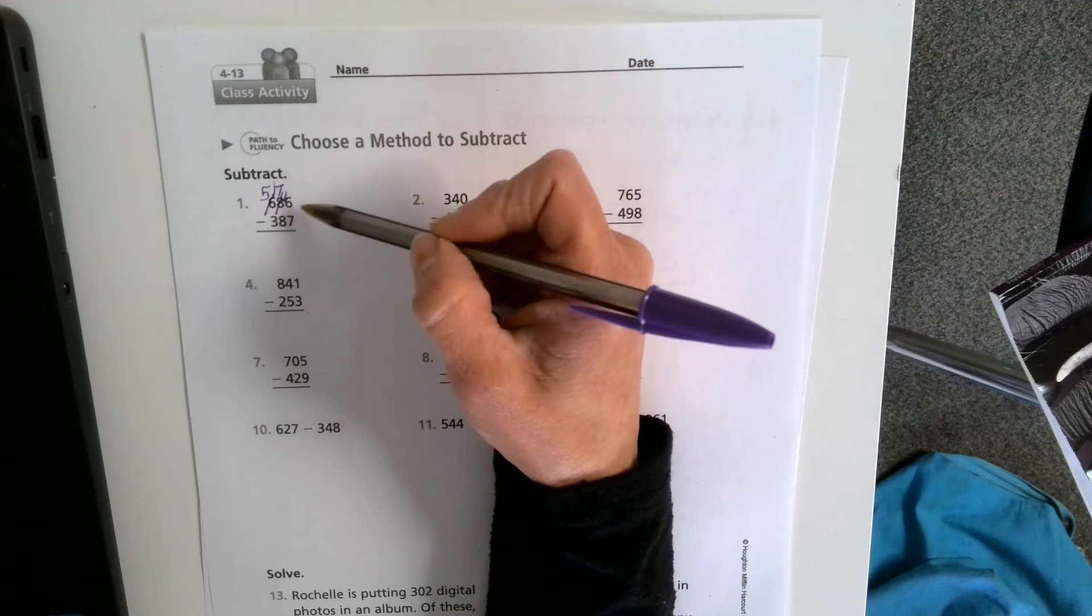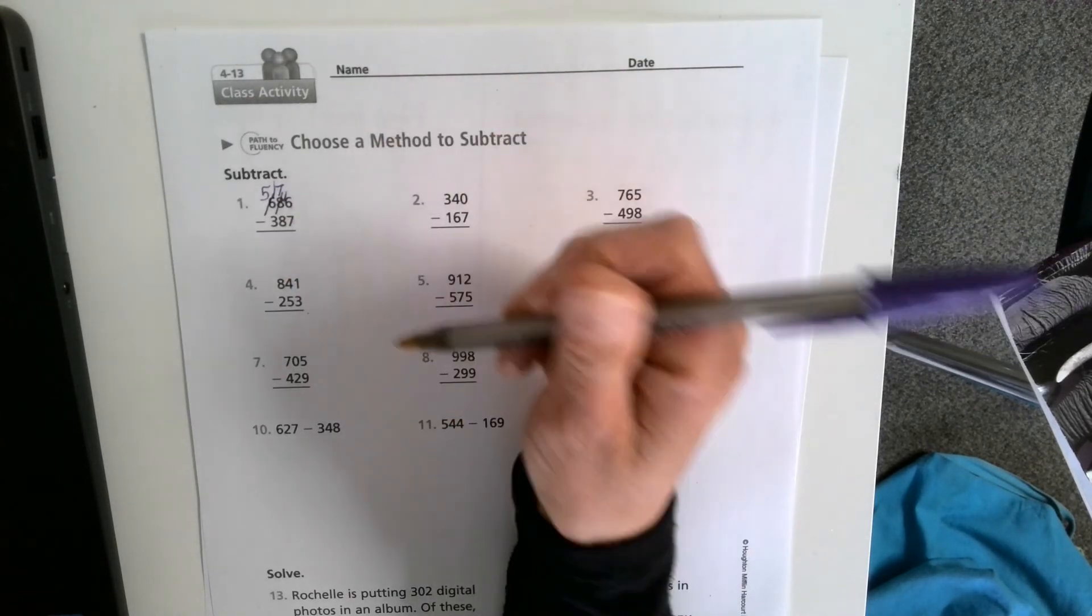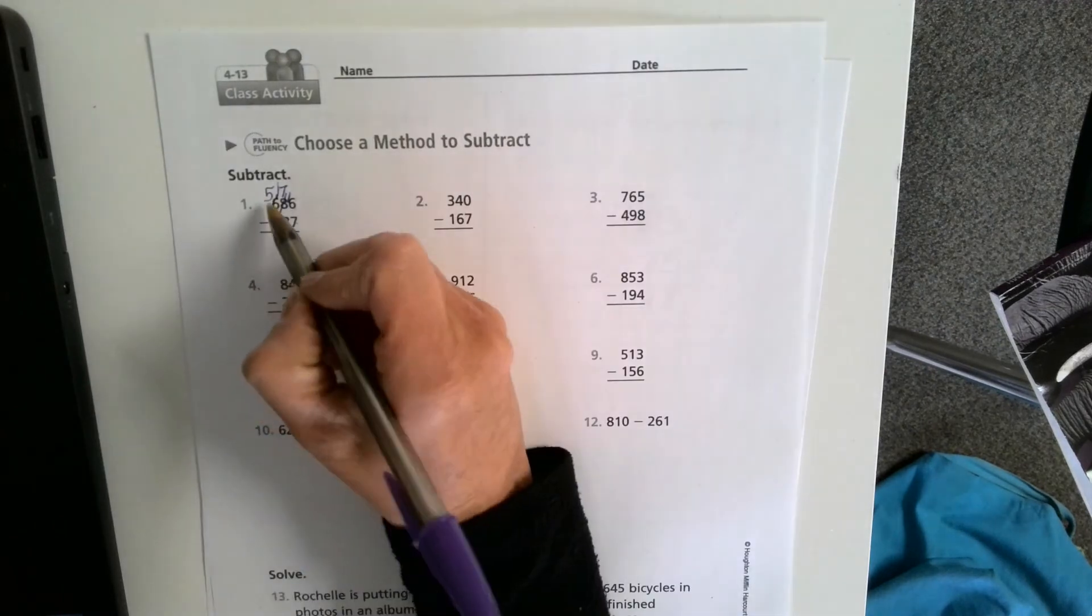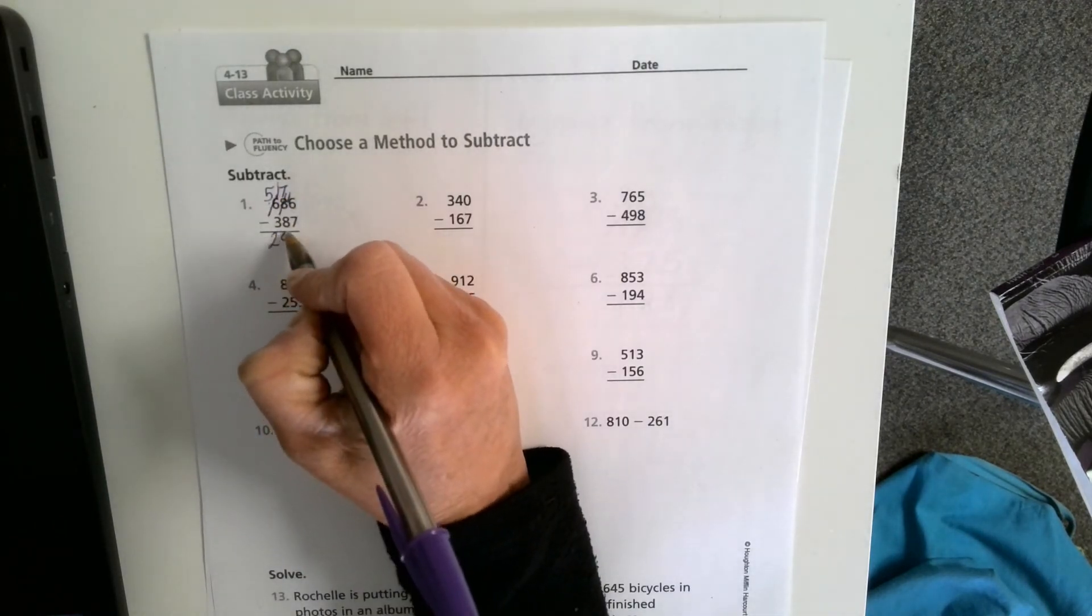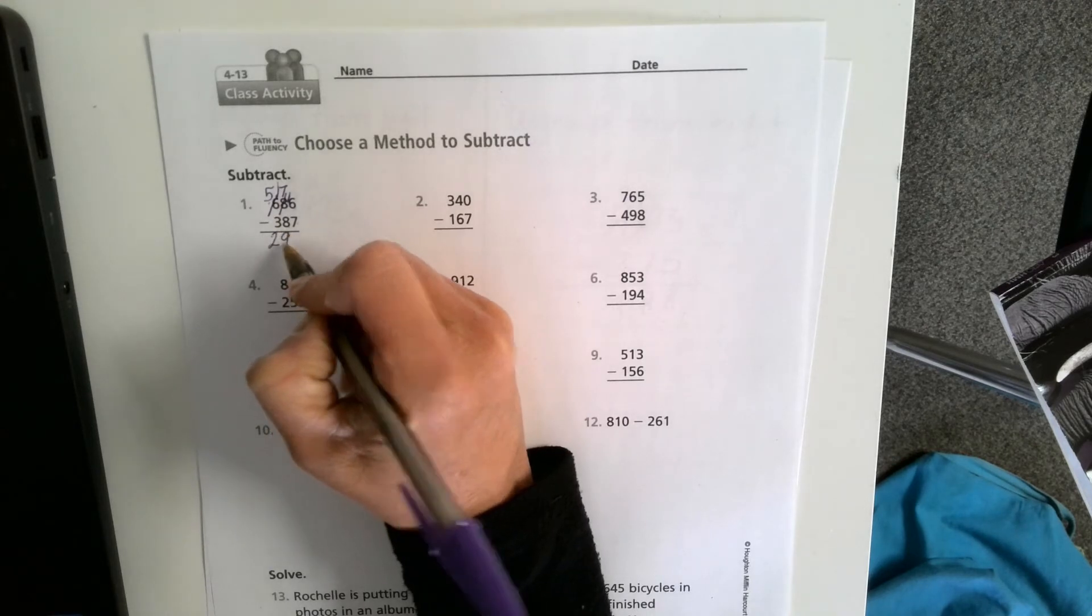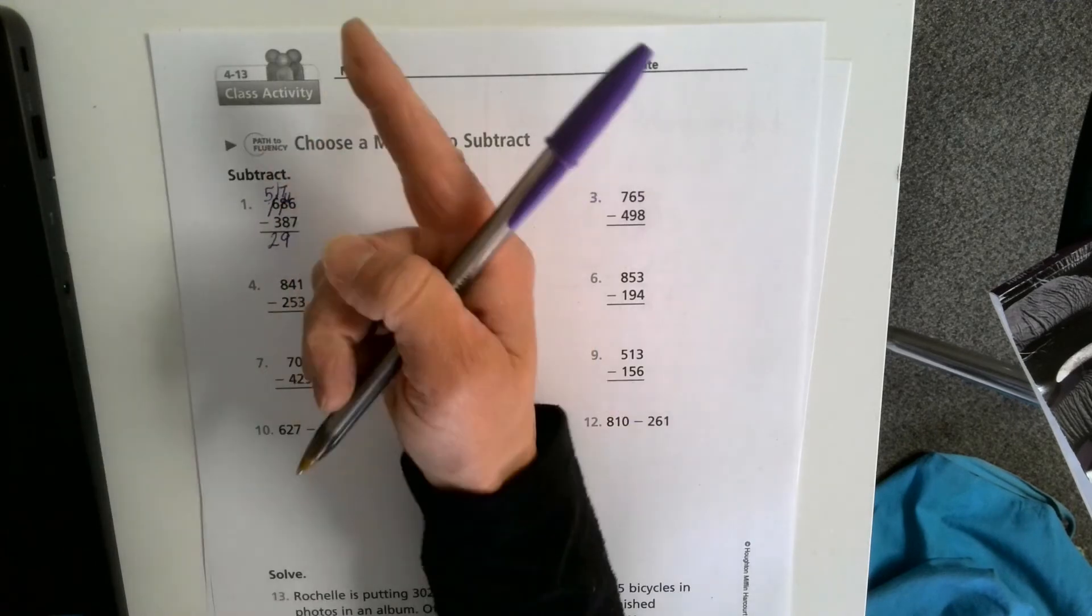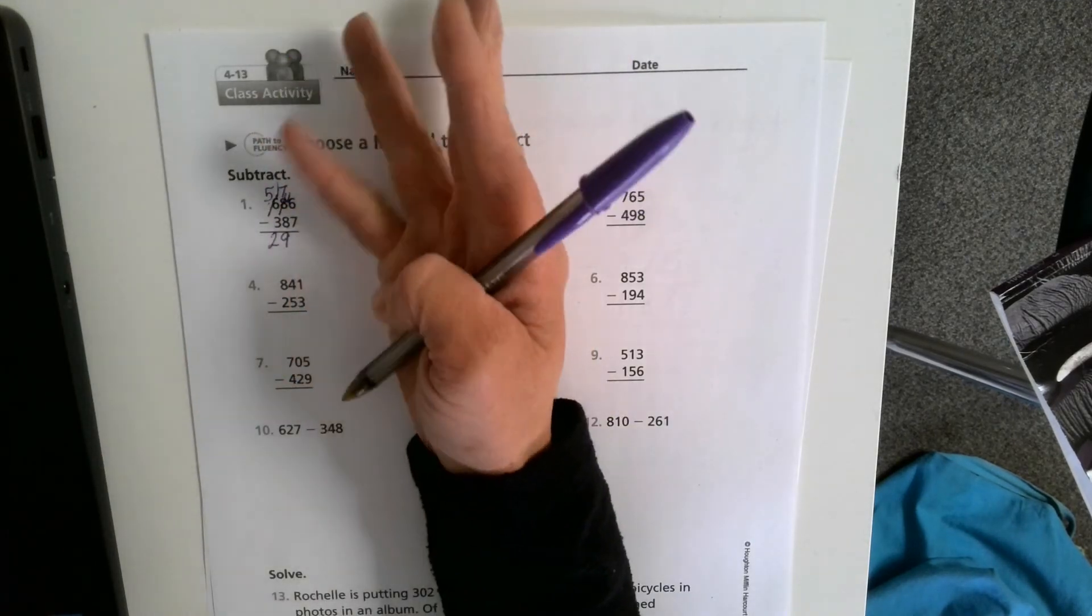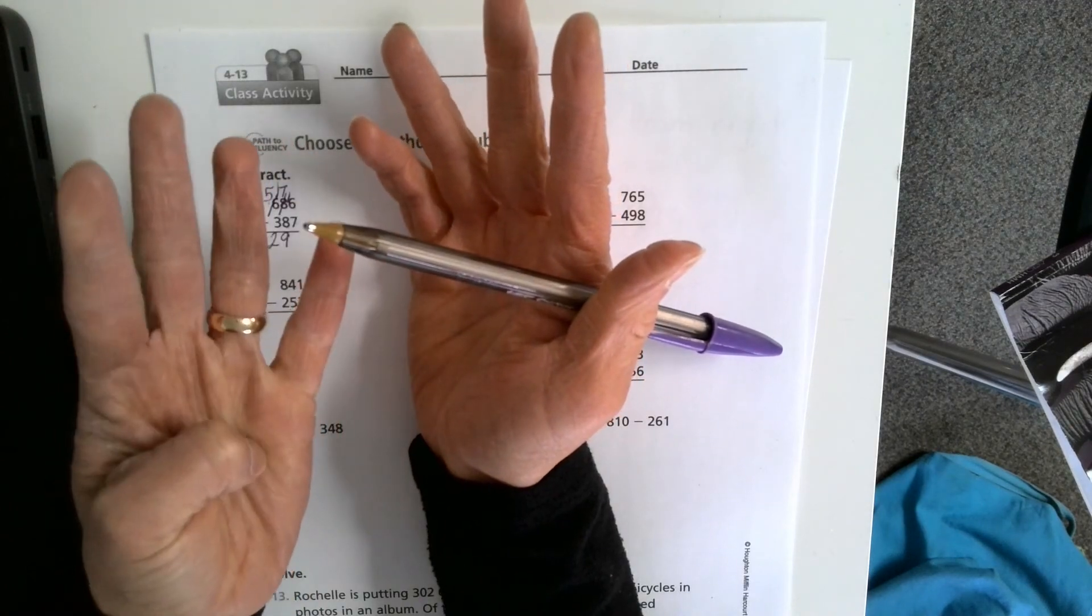So now all my numbers on top are greater than the numbers below. Now I can subtract from any direction I want. 5 minus 3 is 2. 17 minus 8 is 9. I know that because if I start at 8 and put it in my head and count up to 17, I get 9, 10, 11, 12, 13, 14, 15, 16, 17. I get 9.